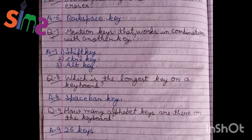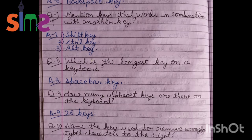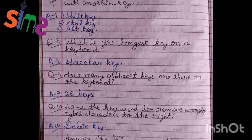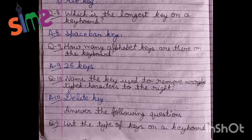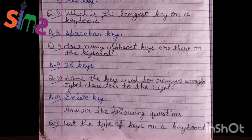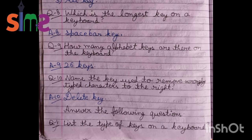Next: mention keys that work in combination with other keys. These are our shift keys, control keys, and alt keys. Another question is: which is the longest key on the keyboard? Space bar key. Space bar key is the longest key on our keyboard. How many alphabet keys are on our keyboard? 26 keys. The answer is 26. Name the key used to remove wrongly typed characters to the right side — that is the delete key. These one-word answers are now complete.